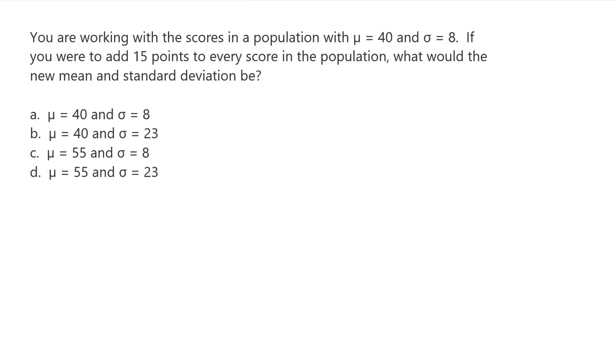You are working with the scores in a population with the population mean equals to 40 and the population standard deviation equals to 8. If you were to add 15 points to every score in the population, what would the new mean and standard deviation be?